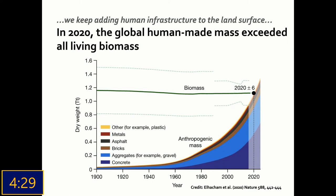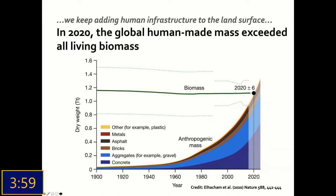This next slide reflects a really pivotal point — looking at where we sit between the global human-made mass by dry weight versus the available living biomass. The green line shows from 1900 up to 2020 the amount of biomass on a global basis, and what you can see is the increase in anthropogenic mass — not biomass — in terms of adding to that land surface challenge. Things such as metals, asphalt, bricks, aggregates and concrete are all increasing the burden, or the support required from the land surface to serve those challenges.